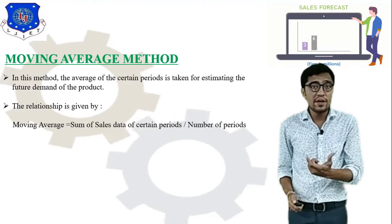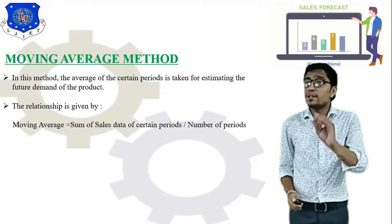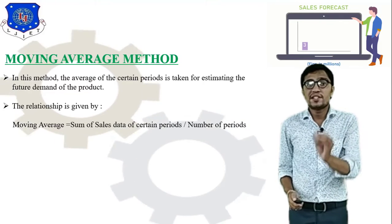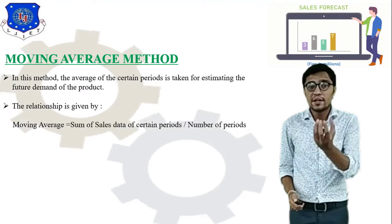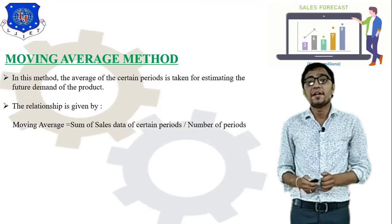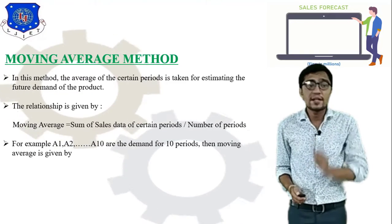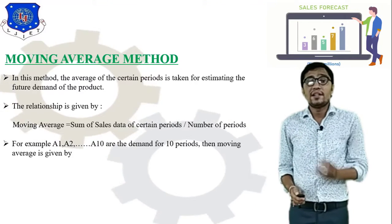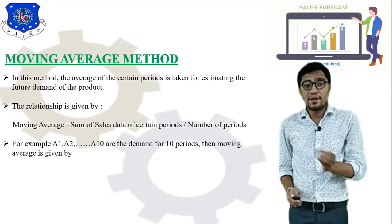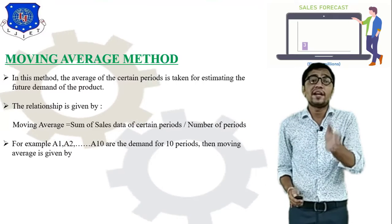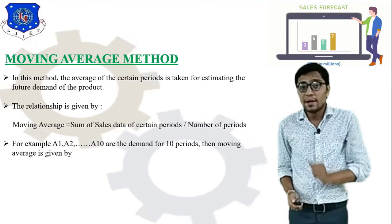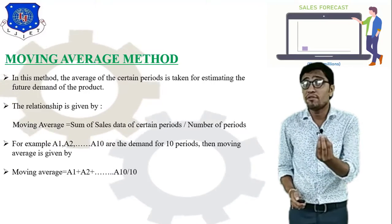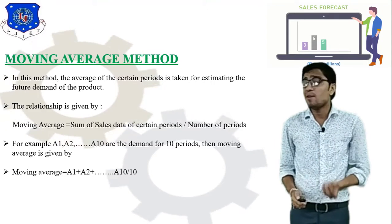The basic equation to find forecasting is: Moving Average = Sum of sales data of a certain period divided by the number of periods. For example, if a1, a2, up to a10 are the demand for 10 months, then the moving average is calculated using that formula.